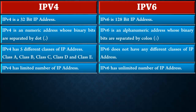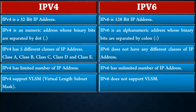IPv4 has a limited number of IP addresses whereas IPv6 has an unlimited number of IP addresses. IPv4 supports VLSM, which is virtual LAN subnet mask — a process of dividing an IP address into subnets of different sizes without wastage of IP addresses — whereas IPv6 does not support VLSM, as it has an unlimited number of IP addresses.